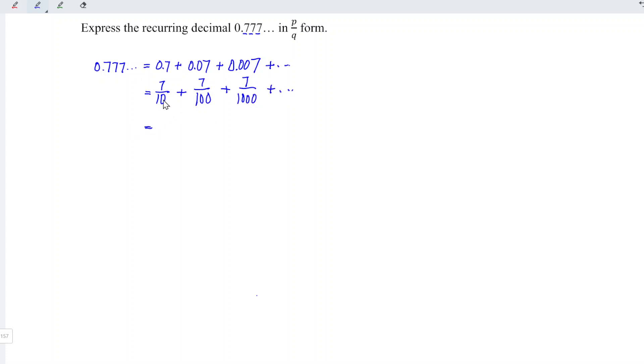So which means that this is in the form of geometric series with a equal to 7 over 10 and r equal to 1 over 10.